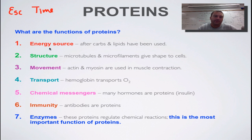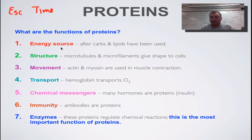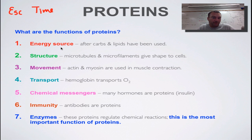Energy source: most animals, like humans and other mammals, don't really use protein as an energy source — we'd rather use carbohydrates or lipids. But under stress, when our body doesn't have carbohydrates or lipids available, we will begin to break down our own muscles as an energy source. It's a place of last resort. Think of Holocaust survivors when the death camps were liberated — they looked like skin and bones because their bodies had already digested every available carbohydrate, then all body fat, and were then breaking down their muscles. You're pretty close to dying from starvation when you start breaking down your muscles.